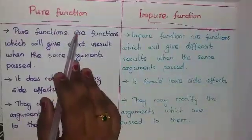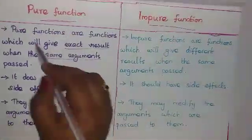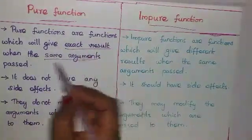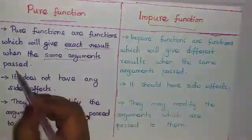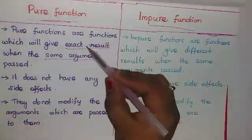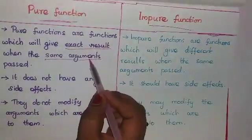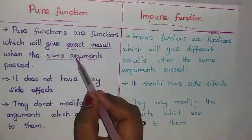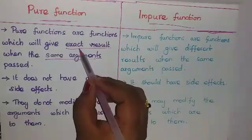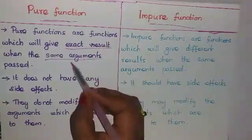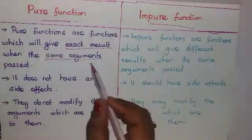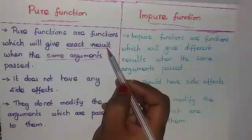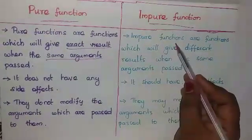First, let us see what a pure function is. Pure functions are functions which will give the exact same result when the same arguments are passed. The function always returns the same result for the same arguments — same result means output, same arguments means inputs.